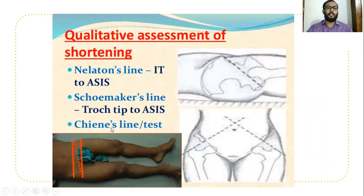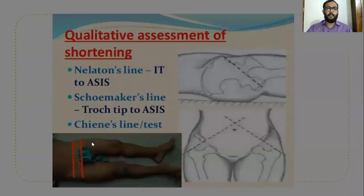Coming to Shenton's line — lines drawn from both the anterior superior iliac spine to the greater trochanter should be parallel. But in any fracture or dislocation, these two lines may not be parallel. This is Shenton's line.